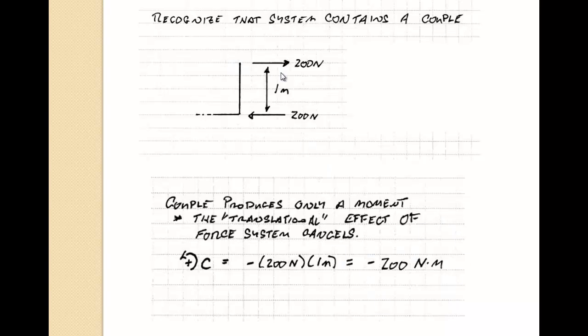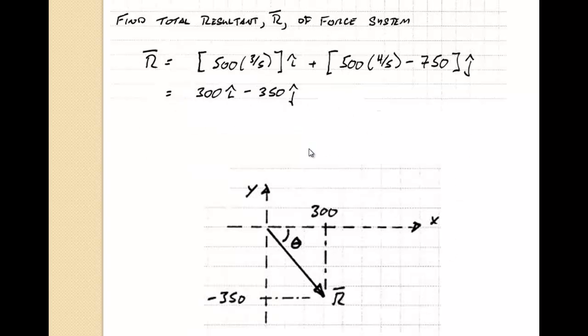And now this force system, this applied force system of two forces forming a couple, has no net translational effect. Meaning that if I was going to apply this to a block, you would have something pulling it to the positive x direction and also pulling it to the negative x direction for a no net translational force.